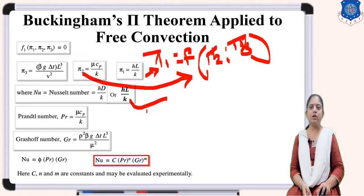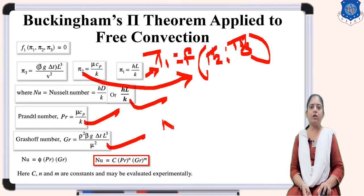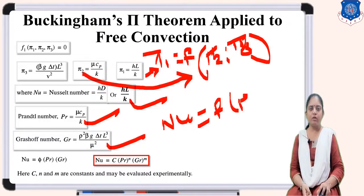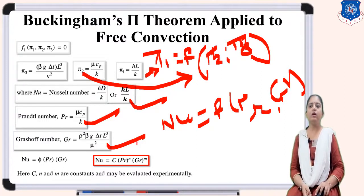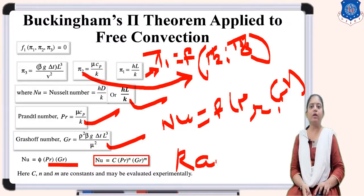The final pi equation gives: pi1 = HL/K (Nusselt number) is a function of pi2 = mu·Cp/K (Prandtl number) and pi3 = rho²·beta·g·delta T·L³/mu² (Grashof number). So the Nusselt number is a function of Prandtl number and Grashof number. The product of Prandtl number and Grashof number is the Rayleigh number, and M and N are constants depending on the temperature difference.